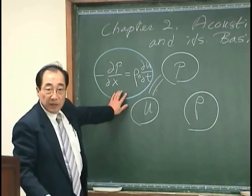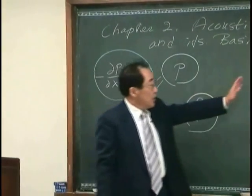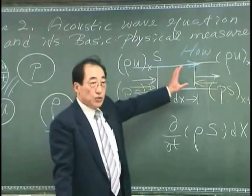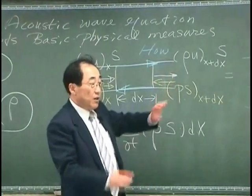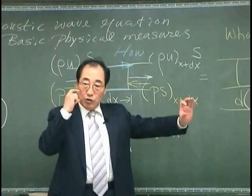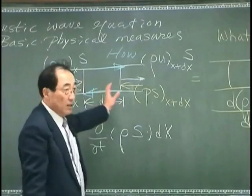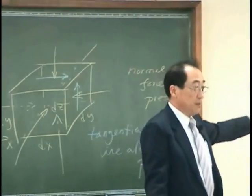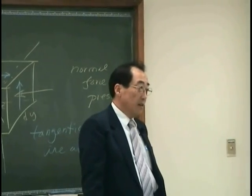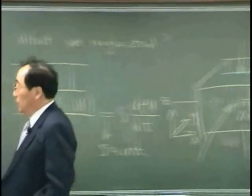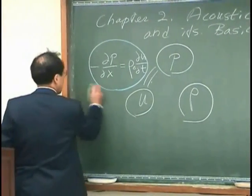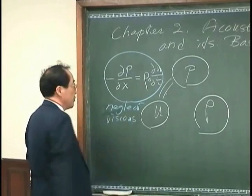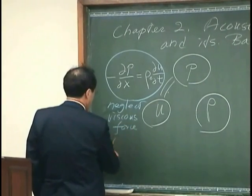So that means that this relation essentially says there is no damping, no viscous force. In other words, the fluid we are considering behaves like this: when I shout, and if it is a one-dimensional acoustic wave — like the acoustic pressure wave inside of a duct — then anybody 10 kilometers from me can hear what I am talking. So this is the model that neglects viscous force.